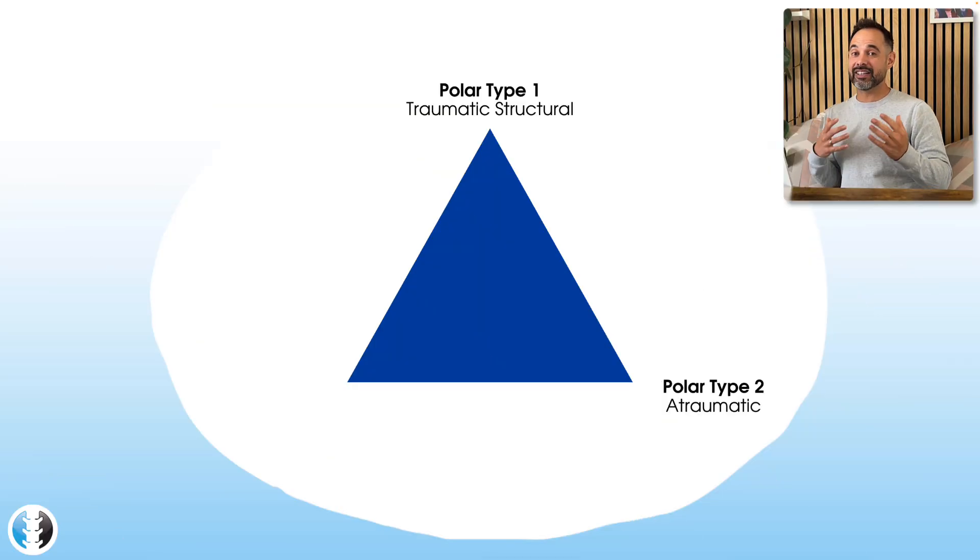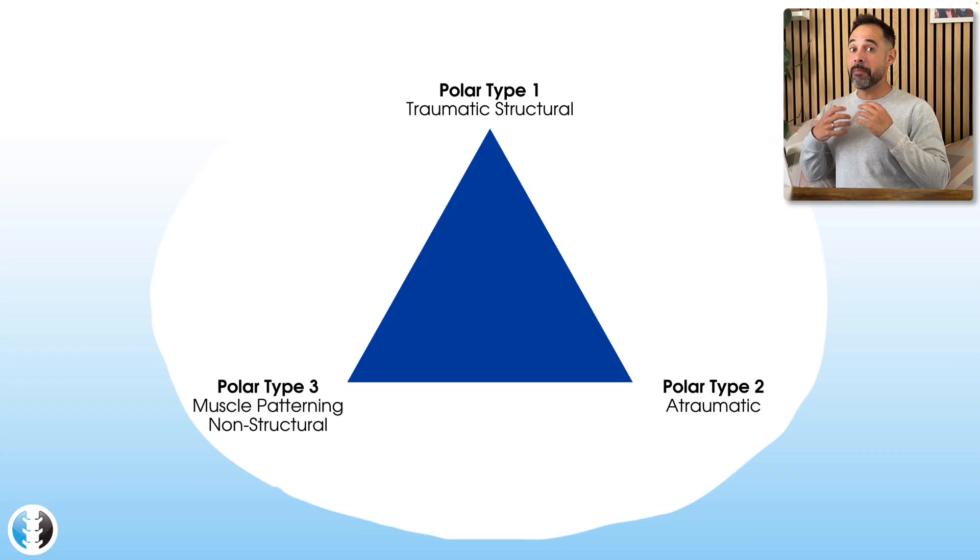So that would be your polar type 2, your atraumatic group. So that's type 1 and type 2. Finally, let's talk about polar type 3. And these are your muscle patterning non-structural patients. So as the name suggests, these patients do not necessarily have a structural cause to their instability. They haven't had a trauma that's led to a Hill-Sax lesion or a Bankart lesion like type 1. And they don't have this generated acquired laxity over time like the type 2 patients. Instead, it is abnormal muscle patterning that leads to these patients feeling unstable.